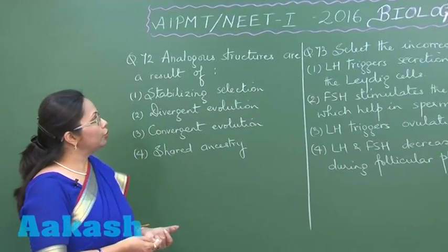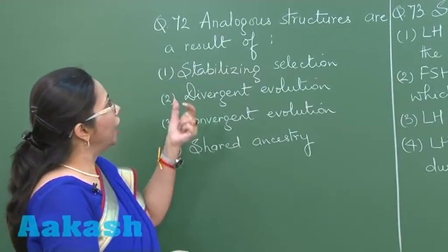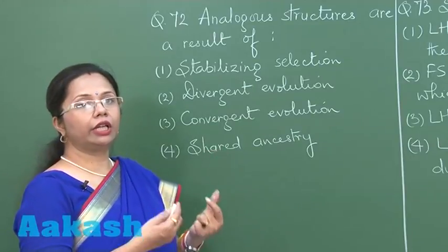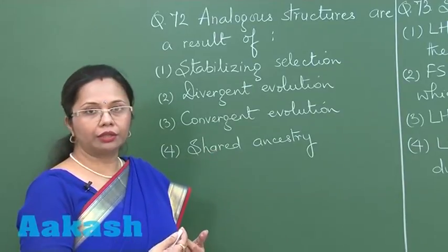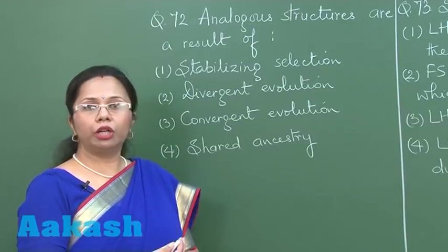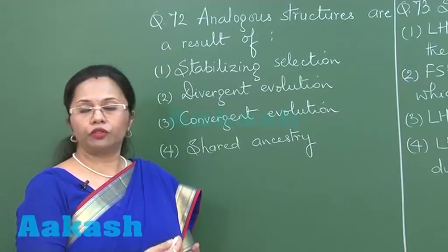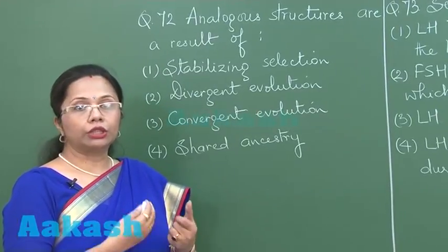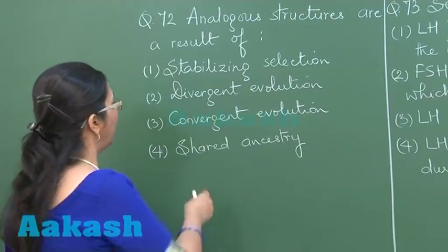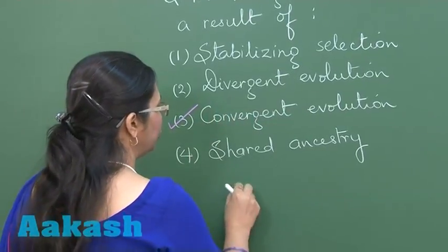Question 72 is an often repeated question in AIPMT — analogous structures. Analogous structures arise in unrelated organisms that do not share any ancestry, but have developed similar phenotypes because they were subjected to similar types of selection pressures. Such evolution is convergent evolution, and that is the answer: convergent evolution.